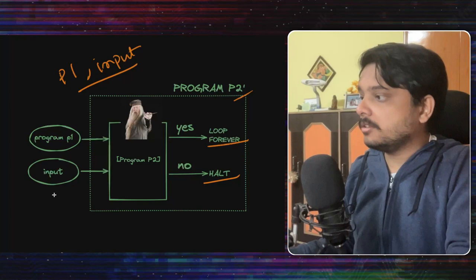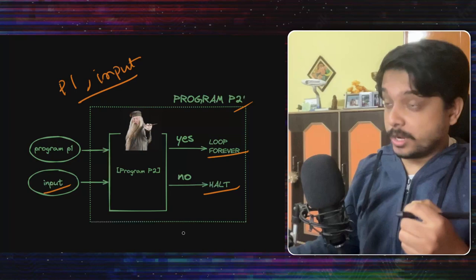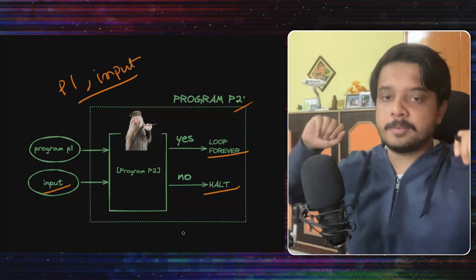Now what we need to do is we need to take this larger program P2 dash and pass it through itself. Now I understand this might be a bit confusing, passing a program through itself and all this, but think like this.